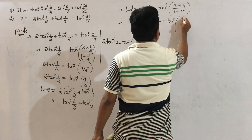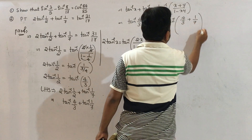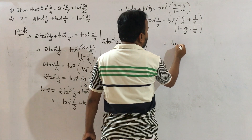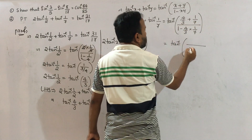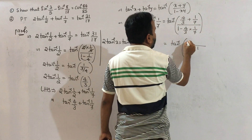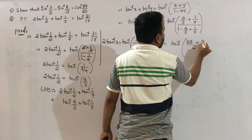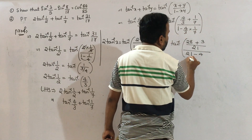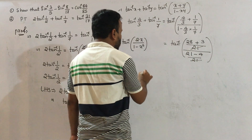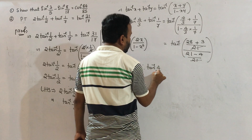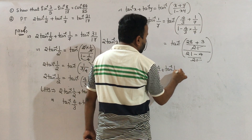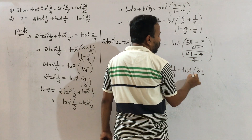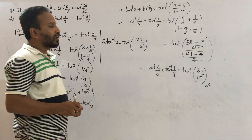Now, tan inverse 4 by 3 plus tan inverse 1 by 7 equals tan inverse of (4 by 3 plus 1 by 7) divided by (1 minus 4 by 3 into 1 by 7). The numerator: 28 plus 3 over 21 equals 31 by 21. The denominator: 21 minus 4 over 21 equals 17 by 21. The 21s cancel, giving tan inverse of 31 by 17.